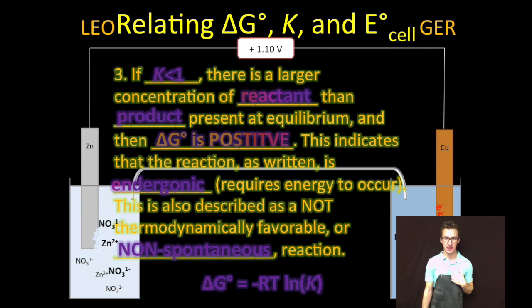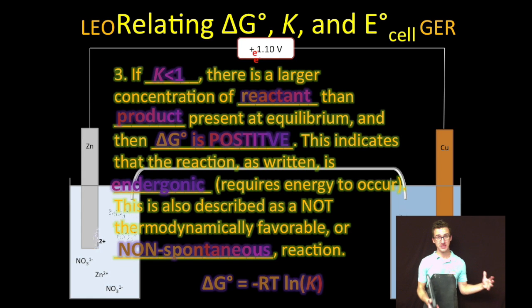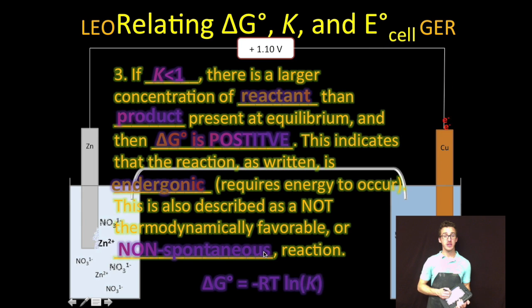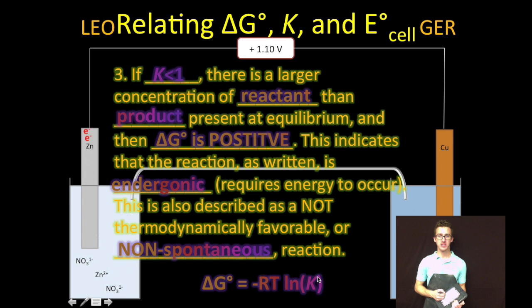To me, this makes a lot of sense. So if you have a lot of reactant present at equilibrium, you haven't formed a lot of product. The reaction as written isn't very spontaneous. And as you think mathematically how that works out, when you take the natural log of a number less than 1, you get a negative number. A negative times a negative is a positive. Boom. Math.